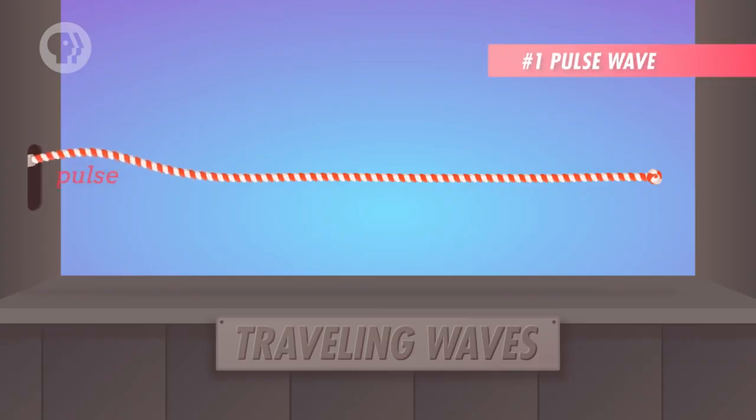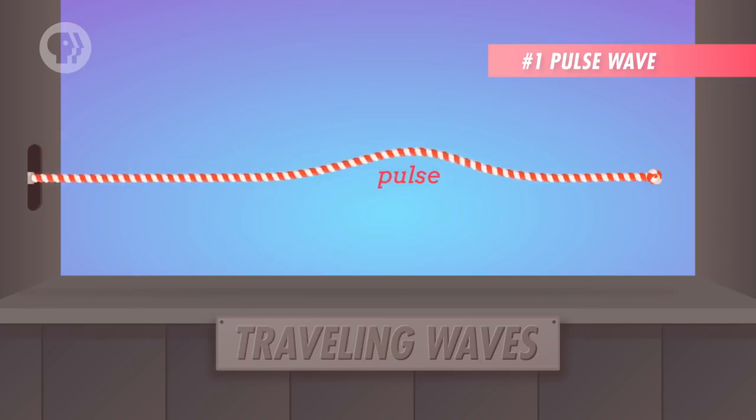A pulse wave is what happens when you move the end of the rope back and forth just one time. One lonely crest travels through the rope. That's the pulse.